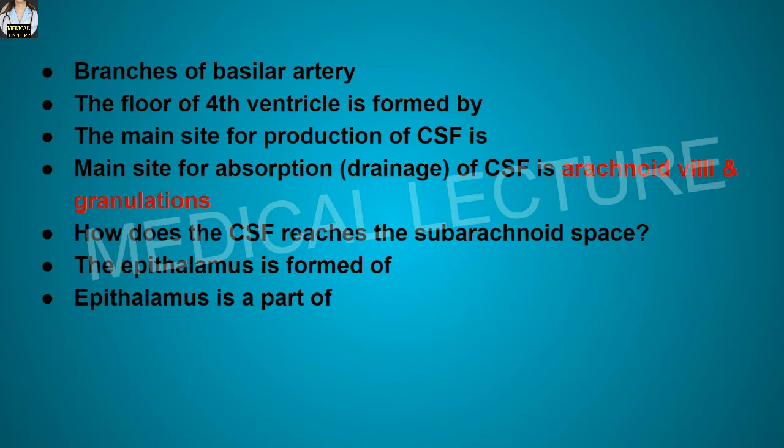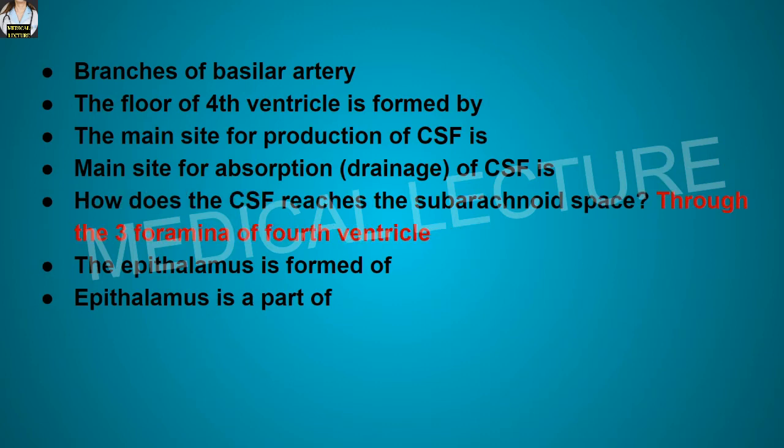How does the CSF reach the subarachnoid space? It actually reaches the subarachnoid space by passing through the three foramina of the fourth ventricle.